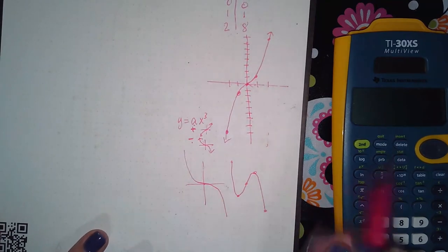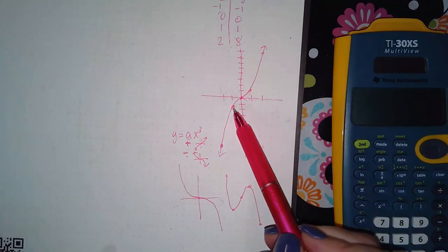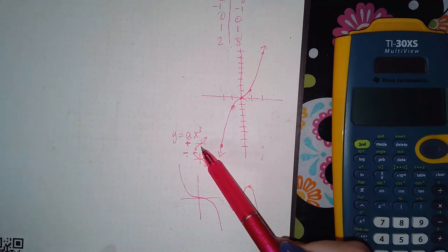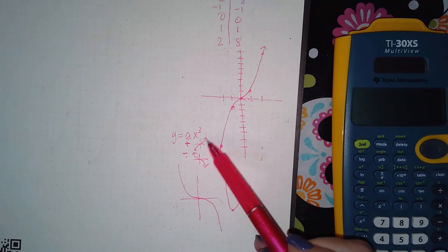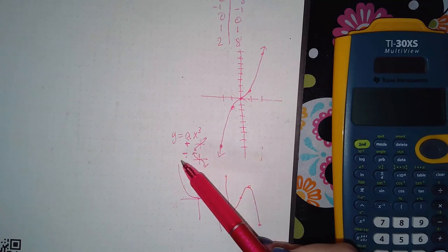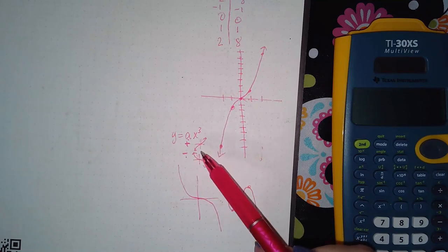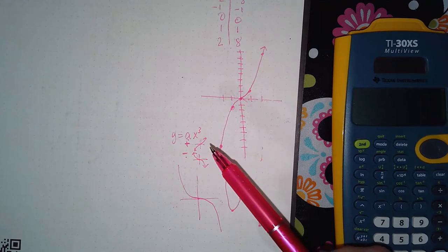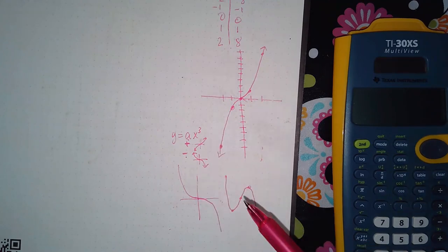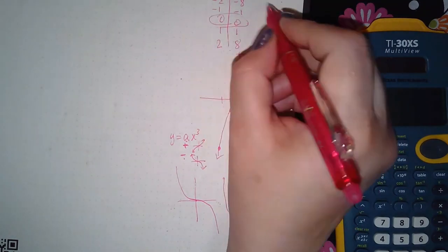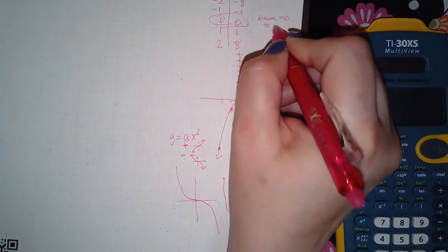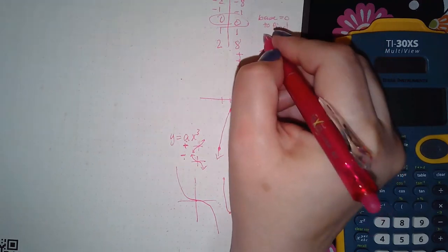And so that's really the idea behind, or the basic information about, an x cube. So we need to understand what the main shape looks like, which is this shape, and then we need to understand that if it's positive in the front it's going to go up to the right and down to the left. If it's negative in the front it's going to switch it, right? So we also need to know how to find that center. And in order to get the center, you have to set your base equal to zero to find the center.